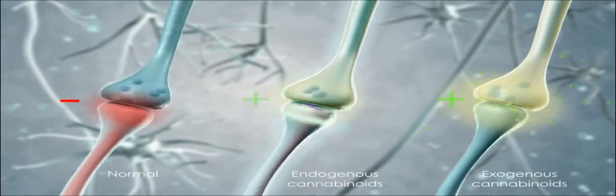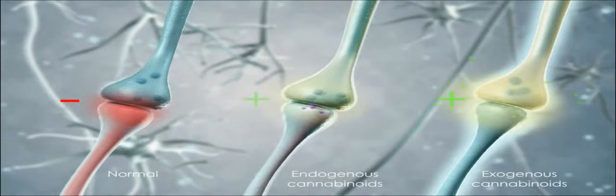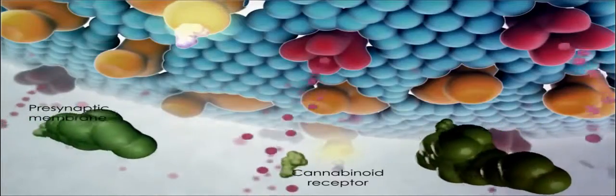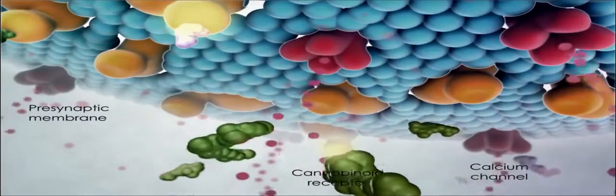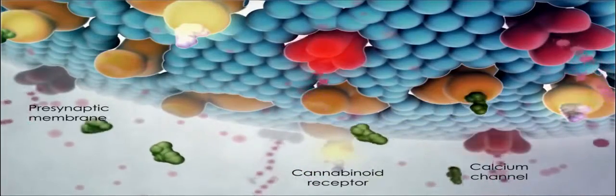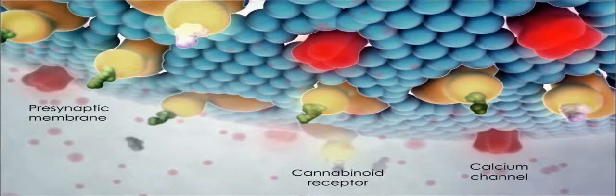The effects of cannabinoids may be illustrated by comparing three neuronal synapses showing normal pain transmission, the influence of endogenous cannabinoids, and the influence of exogenous cannabinoid administration.